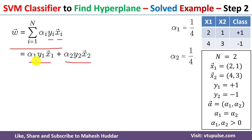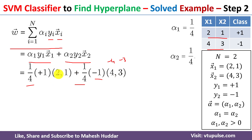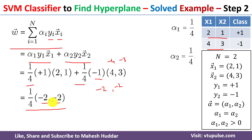We put in all known values: alpha 1 is 1 by 4, y1 is plus 1, x1 vector is 2 comma 1; alpha 2 is 1 by 4, y2 is minus 1, x2 vector is 4 comma 3. Taking plus 1 inside gives 2 comma 1; taking minus 1 inside gives minus 4 comma minus 3. Factoring out 1 by 4, we get 1 by 4 times (minus 2, minus 2), which simplifies to minus 1 by 2 comma minus 1 by 2. So the weight vector equals (minus 1/2, minus 1/2).